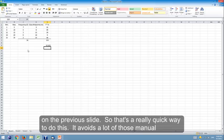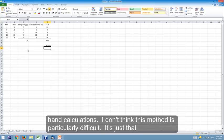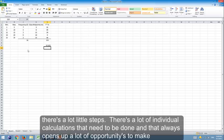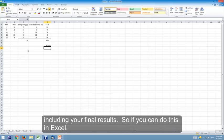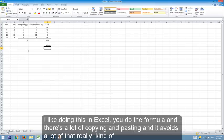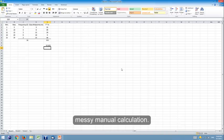So that's a really quick way to do this, right? It avoids a lot of those manual hand calculations. I don't think this method is particularly difficult. It's just that there's a lot of little steps. There's a lot of individual calculations that need to be done. And that always opens up a lot of opportunities to make, you know, a simple mistake on one calculation. And that's going to mess up everything from then on, including your final results. So if you can do this in Excel, I like doing this in Excel because you do the formula and it's a lot of copying and pasting. And it avoids a lot of that really kind of messy manual calculation.